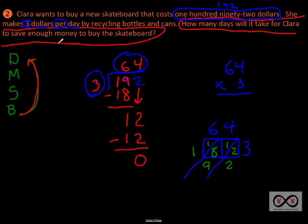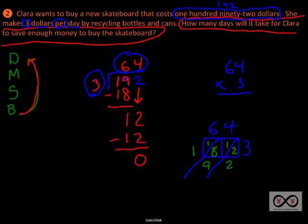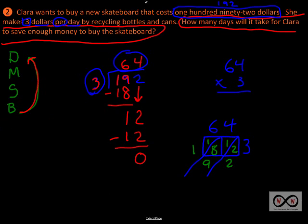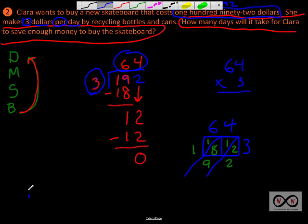So in this case, how many days will it take for Clara to save enough money to buy the skateboard? It will take Clara 64 days. Let's write it in a complete sentence. It's always good practice to do that. It kind of really shows that you understand the problem. So here we go. It will take Clara 64 days. To save enough money to buy the skateboard, you could add that on if you'd like. But really, it will take her 64 days. That is the key information. That's your quotient to this division problem.